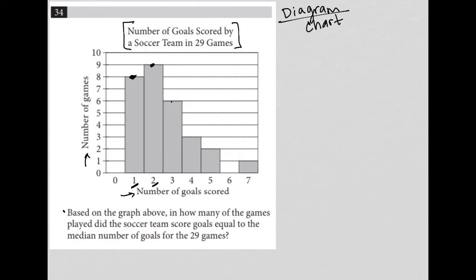So then the question says: based on the graph above, in how many of the games played did the soccer team score goals equal to the median number of goals for the 29 games? So median — how do you find a median? A median is just the middle number. You should always think: median equals middle.